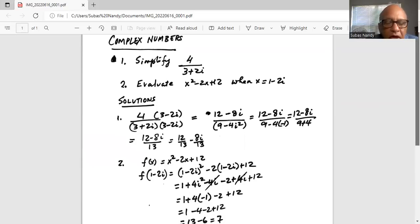So we write a minus b whole square is a squared minus 2ab plus b squared. So my a is 1, 1 squared is 1, my b is 2i, which squared is 4i squared minus 2ab. So minus 2 times 1 is 2. 2 minus 4i. So my 2ab is minus 4i.